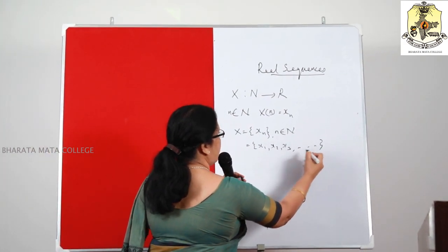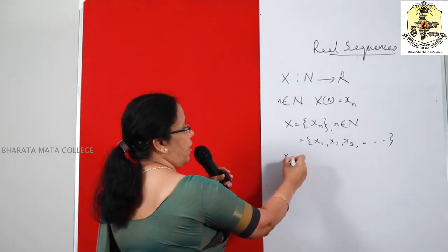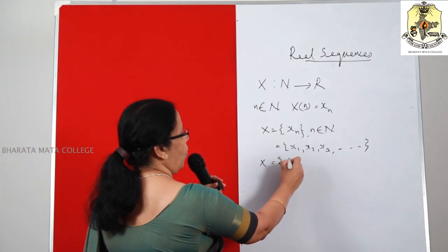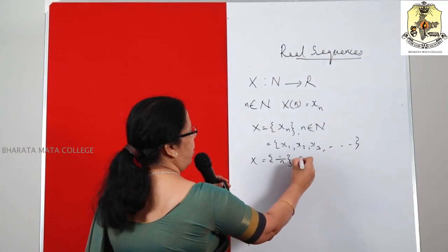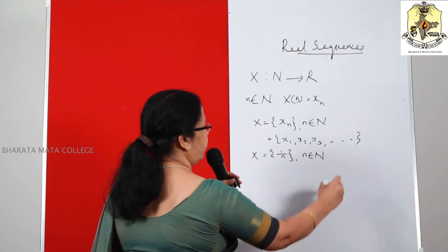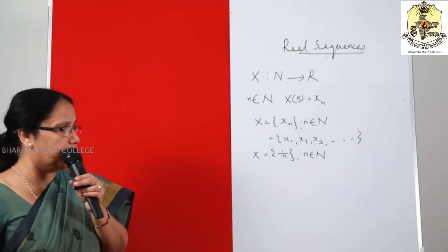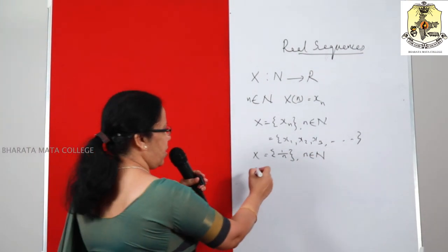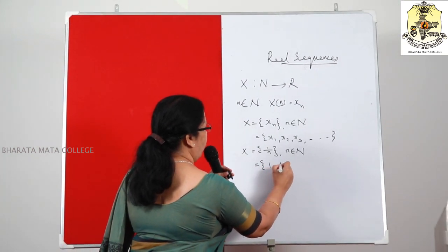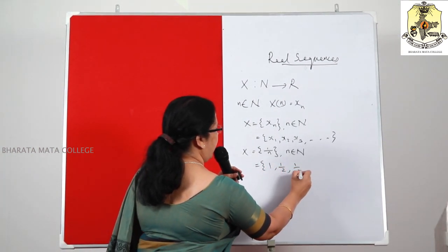Let us see some examples. Let X be the sequence {1/N}, N belonging to N. So as N varies from 1, 2, 3, etc., we get the terms as 1, 1/2, 1/3, etc.